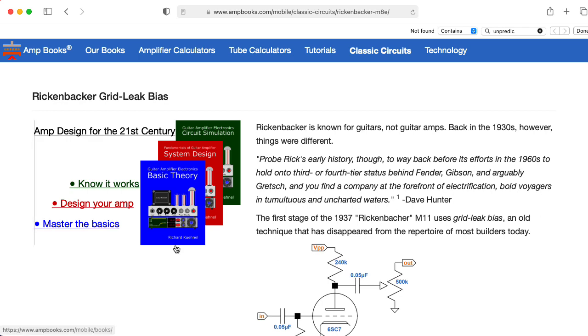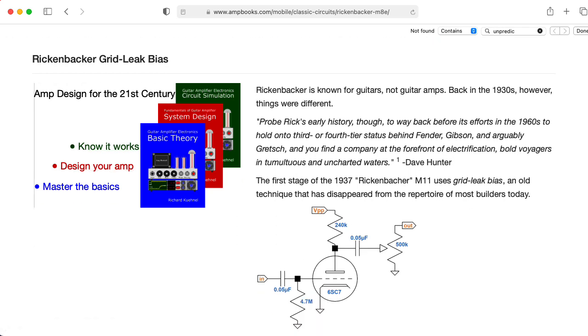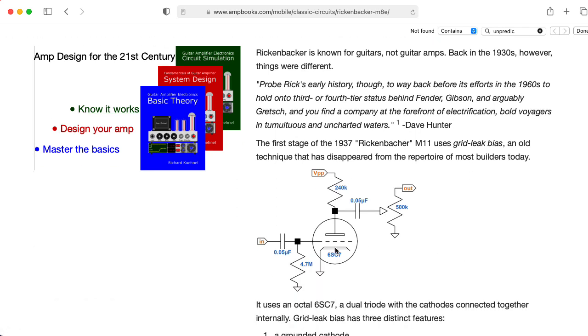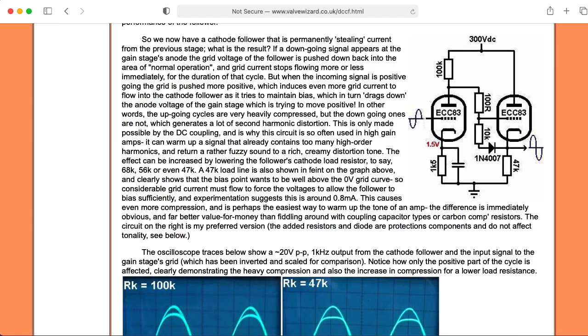Anyway, if you check out Richard Connell's excellent web pages, he has one that talks about a particular bias scheme where you can actually use that current that leaks through the grid to bias the tube. And this is not a technique I've talked about because nobody uses it anymore. It's very hard to get right and quite unpredictable.